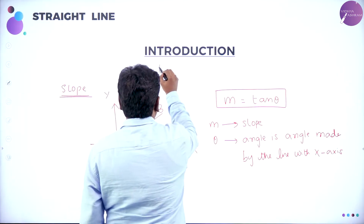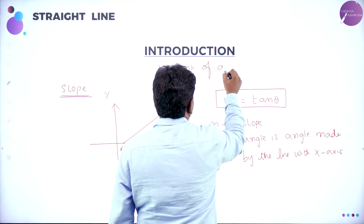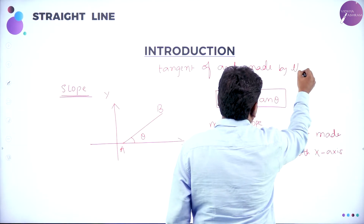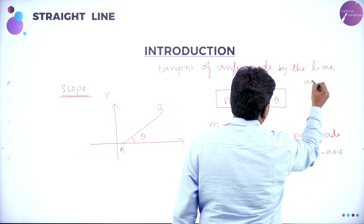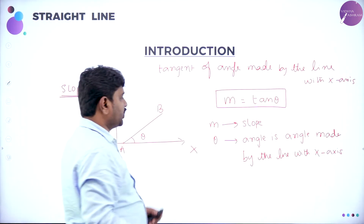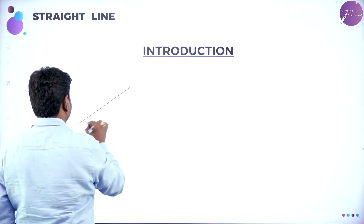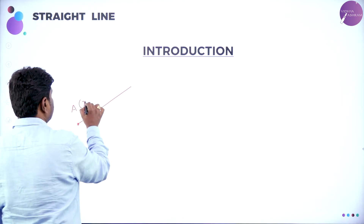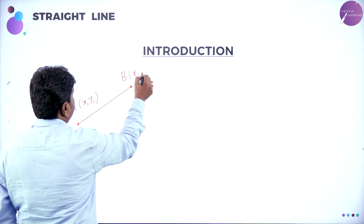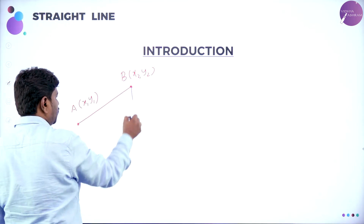Dear students, if I give two line joining points, you can find slope. Suppose if I give one point as A(X1, Y1) and the other point B(X2, Y2), for these two line joining points you can find slope. What we do is draw perpendicular AM perpendicular to BM.